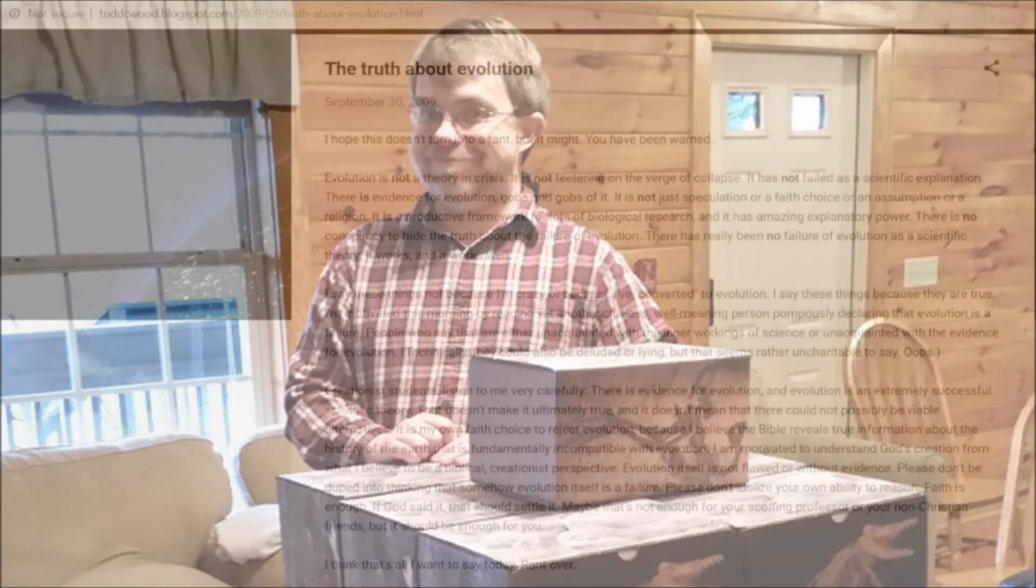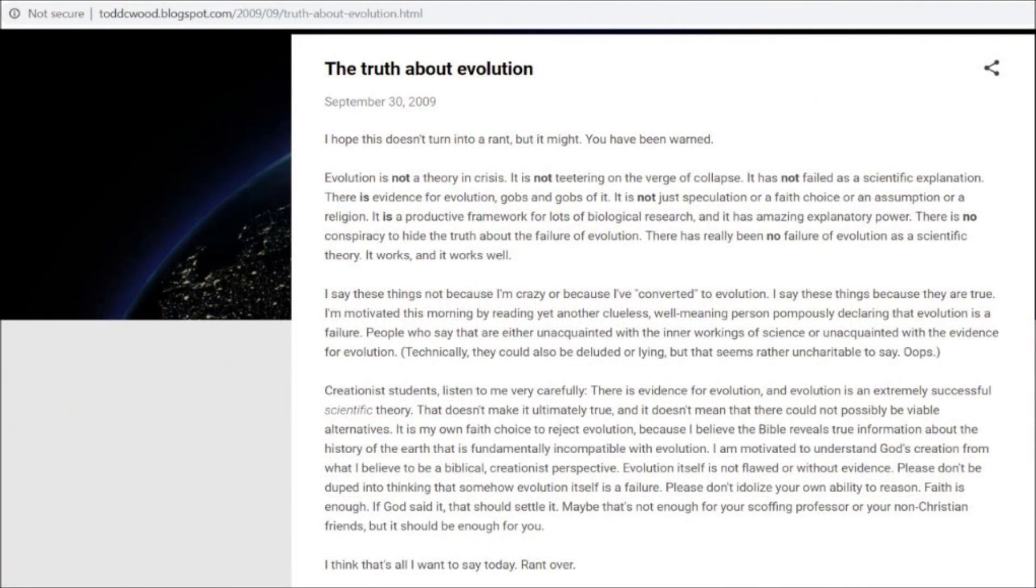Todd also has a blog page where he said this about the evidence for evolution: Evolution is not a theory in crisis. It is not teetering on the verge of collapse. It has not failed as a scientific explanation. There is evidence for evolution, gobs and gobs of it. It is not just speculation or a faith choice or an assumption or a religion. It is a productive framework for lots of biological research, and it has amazing explanatory power. There is no conspiracy to hide the truth about the failure of evolution. There has really been no failure of evolution as a scientific theory. It works, and it works well. I'll put a link to this page in the video description.